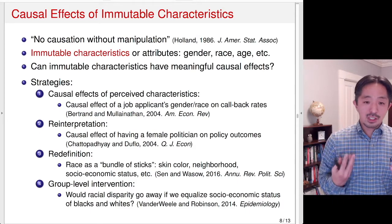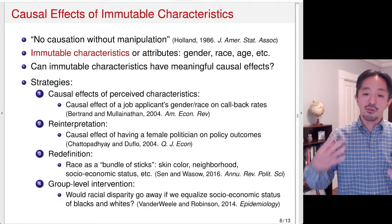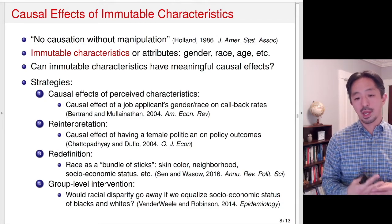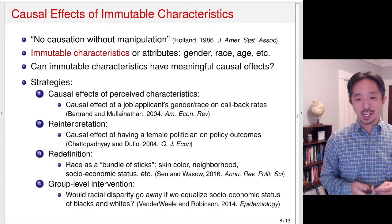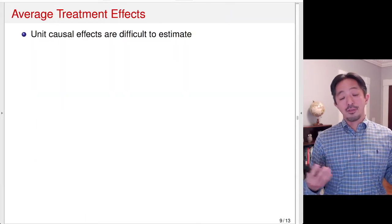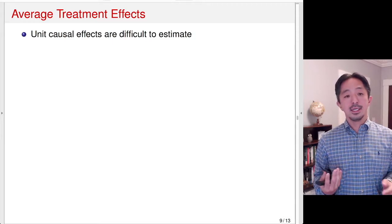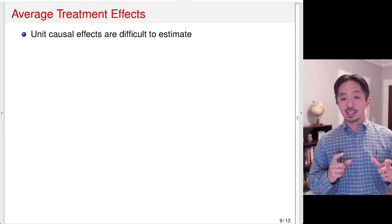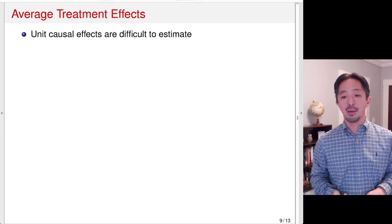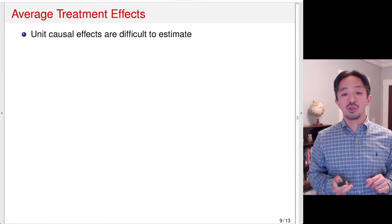So it's easy to casually refer to the effects of race or gender, but if you really think about how to measure and estimate those causal effects, it's much more complicated, and I would like you to think carefully about these issues. Now, we've been defining individual-level effects. As I said, unit-level causal effects are difficult to estimate, in part because we never observe y(0) and y(1) at the same time, yet the causal effect is a contrast between those two potential outcomes.